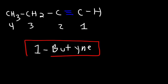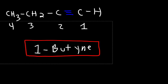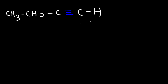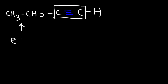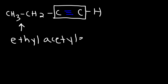Now what is the common name of this particular alkyne? We can see that we have our acetylene group — that's the C triple bond C part — and an ethyl group attached to it. So the common name is going to be ethyl acetylene.